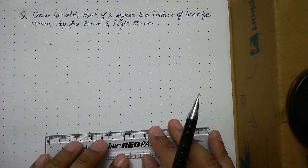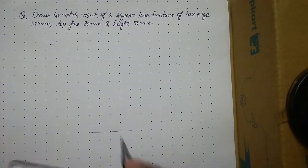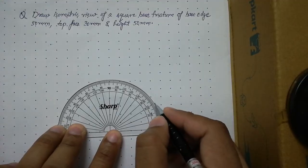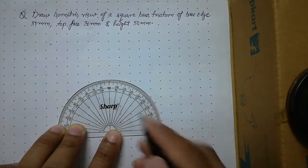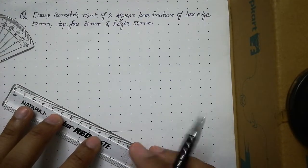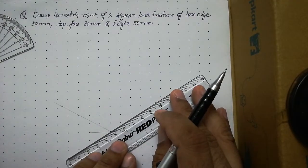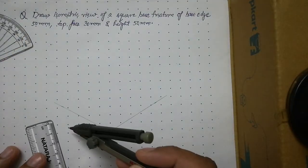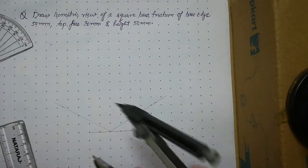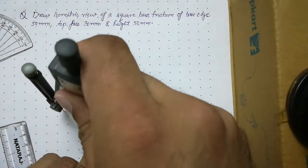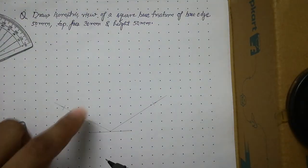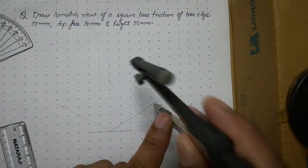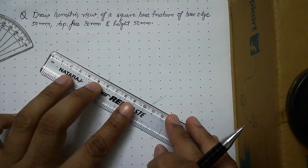You should already be aware of how to draw an isometric cube from previous lectures. Choose one point, align your protractor with it, and draw two isometric axes on both sides at 30 degrees. Keep these lines thin. Cut both axes to 50 mm. From those endpoints draw additional 50 mm lines to form the base, then join the points to get the base of the cube.